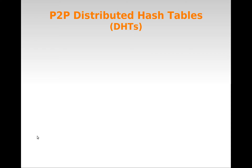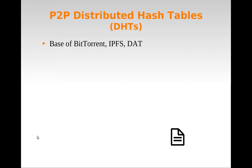Distributed hash tables (DHTs) are another technique used in peer-to-peer systems. They are the base of BitTorrent, IPFS, DAT, and other modern systems. Each content is associated with a unique identifier, usually the hash of its own content. With this identifier, the DHT can locate the actual contents in one of the peers of the network.